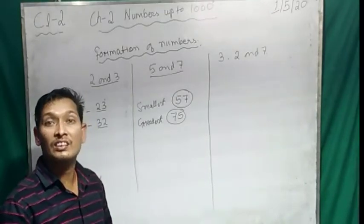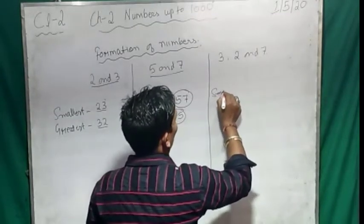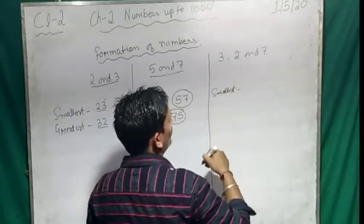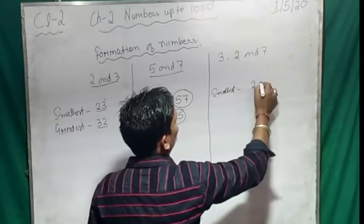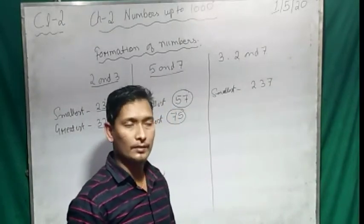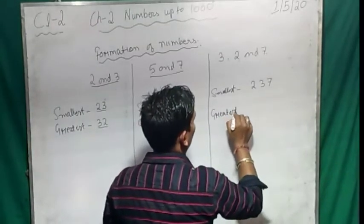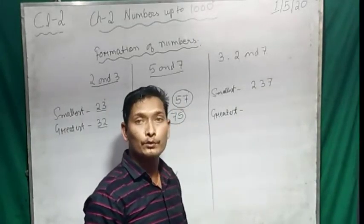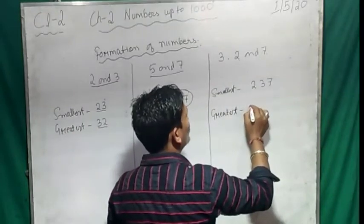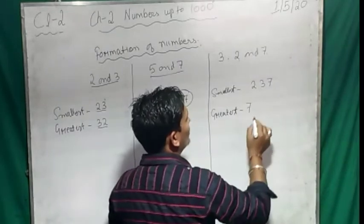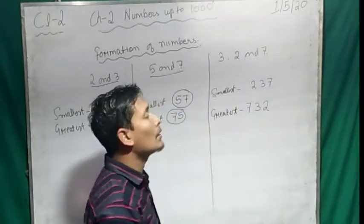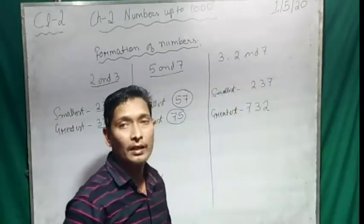Now we will see with a three-digit number. The digits are 3, 2, and 7. For the smallest, start with the smaller number — 2 — then 3, then 7. So 237 is the smallest number. For the greatest, start with the biggest — 7 — then 3, then 2. So 732 is the greatest number and 237 is the smallest number with these 3 digits.